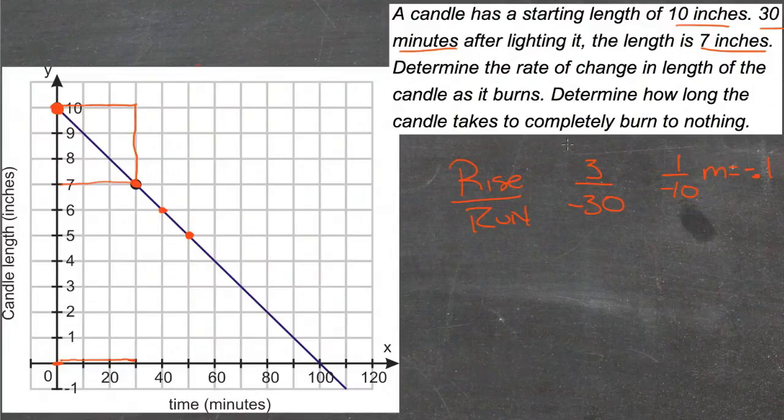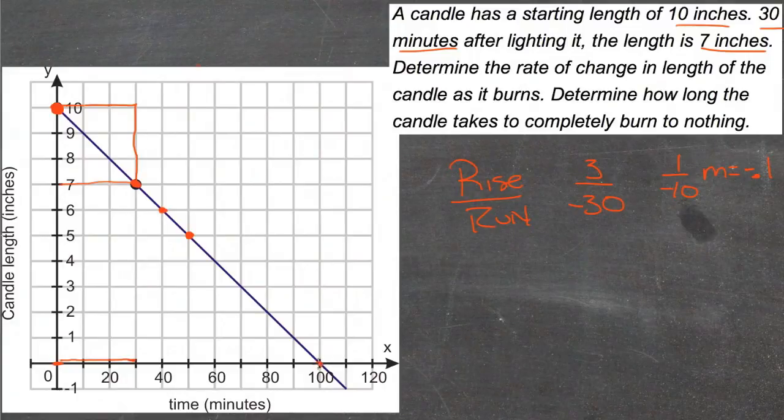Then if we're trying to find out how long it takes the candle to burn to nothing, we can take a look actually at our graph. What we're looking for is the x-intercept. We're looking for what happens to x when y, the length of the candle, goes to 0.